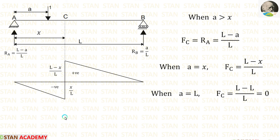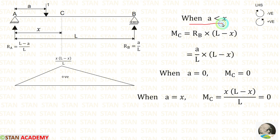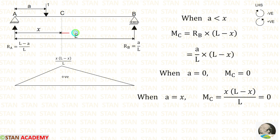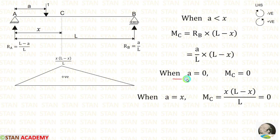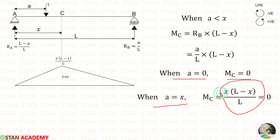Now let us do the bending moment. When A is less than X, we have to calculate the bending moment on the right side. On the right side, we are having only one load — that is R_B, which is equal to A by L, and the distance is (L minus X). So we get (A by L) into (L minus X). When A is equal to 0, the moment at C is equal to 0. When A is equal to X, the moment at C is X into (L minus X) by L. Using that, we can make the first two points.